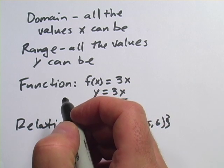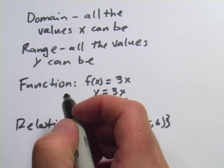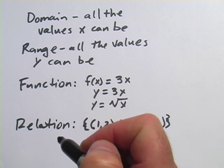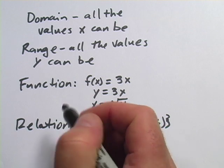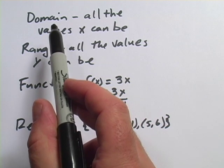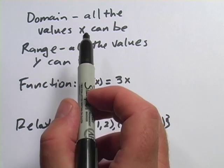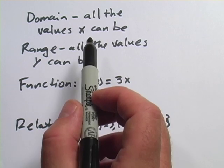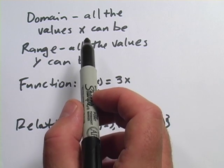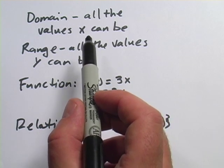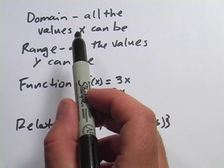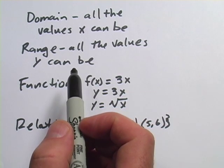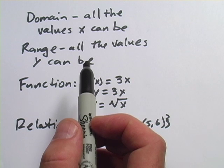Today we're going to be talking about problems that have to do with domain and range of functions and relations. The way you should think about domain is it's all the values that x can be — anything that you can put in for x in some function or relation. And the range is all the values that y can be, anything that y can turn out to be.